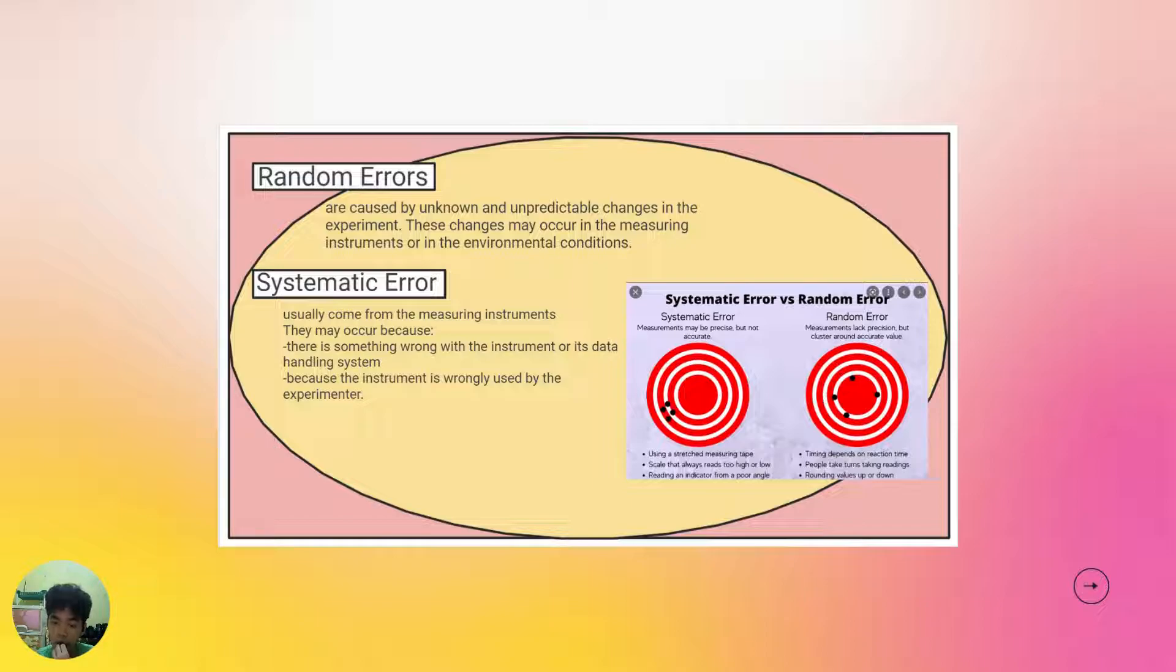Random errors are caused by unknown and unpredictable changes in the experiment. These changes may occur in the measuring instruments or the environmental conditions.